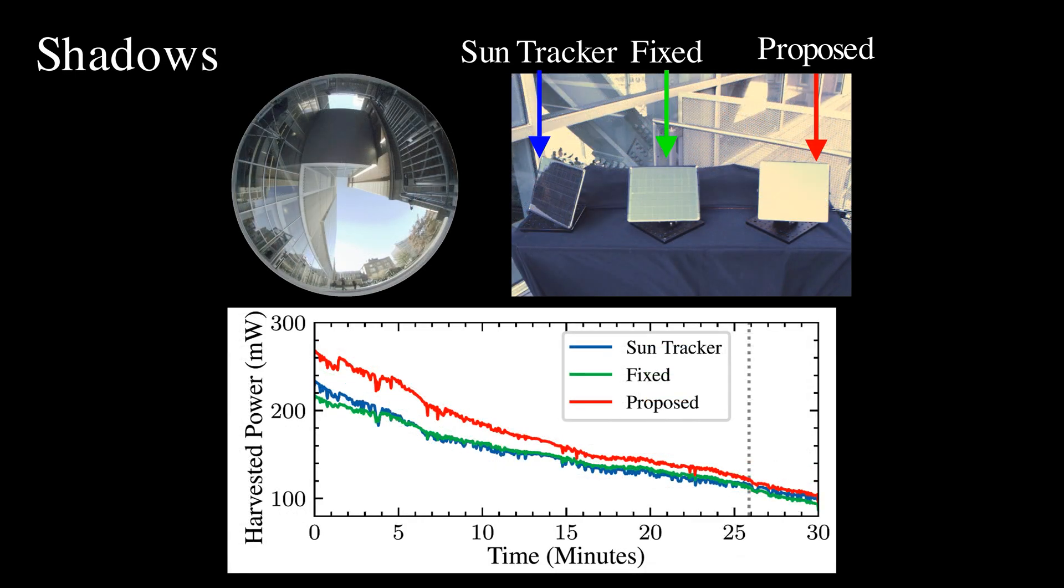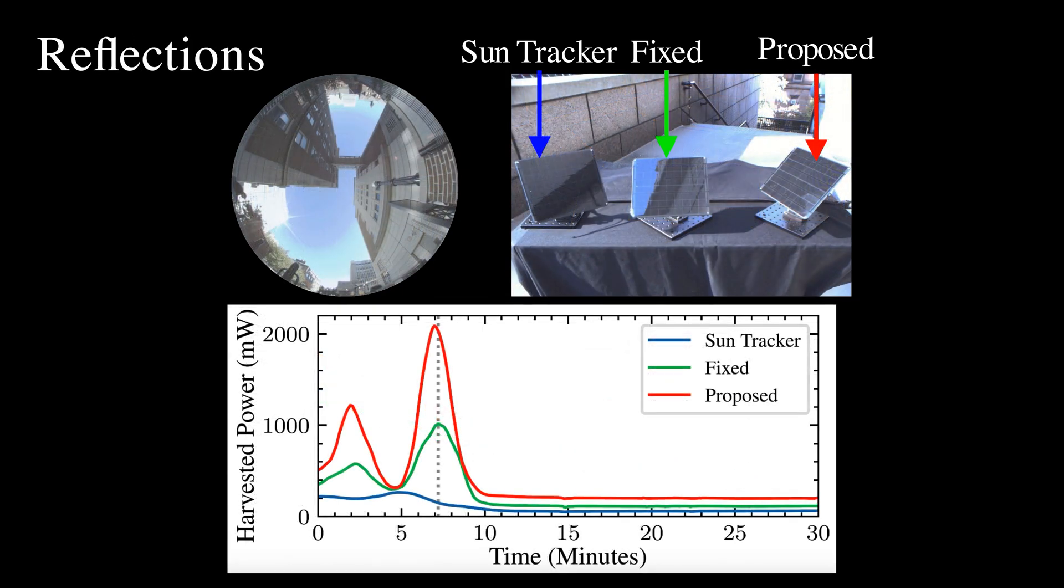On a cloudy day, the sun tracker struggles to find an optimal orientation and even harvests less energy than a panel fixed in a static position. When the panels are shaded by nearby buildings, the proposed system still harvests 10% more energy than the sun tracker and a fixed panel. In urban environments, sunlight reflected off nearby buildings can be a significant energy source. Here we see the panel briefly illuminated by strong reflections. The proposed panel orients itself in the direction of the reflections, harvesting substantial amount of power. The sun tracker, however, cannot adapt to such complex, time-varying lighting conditions.